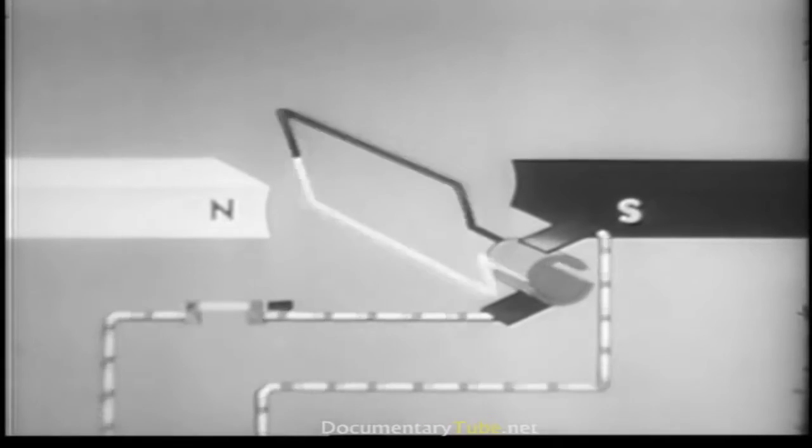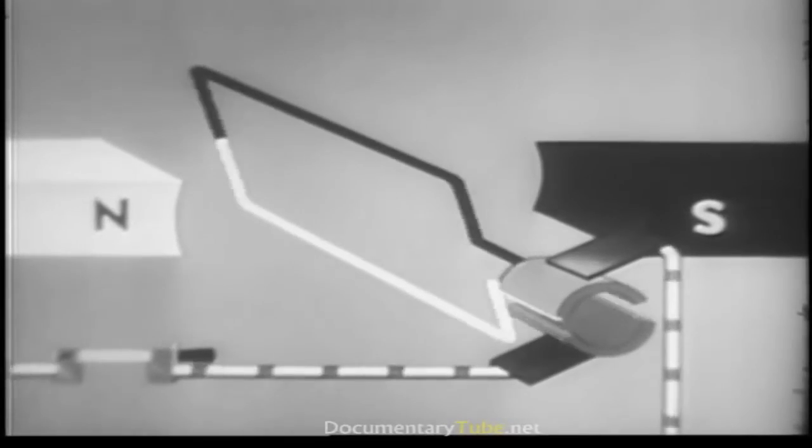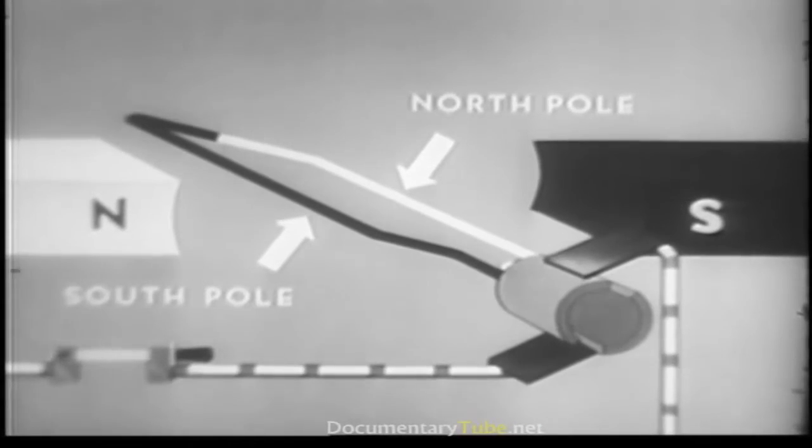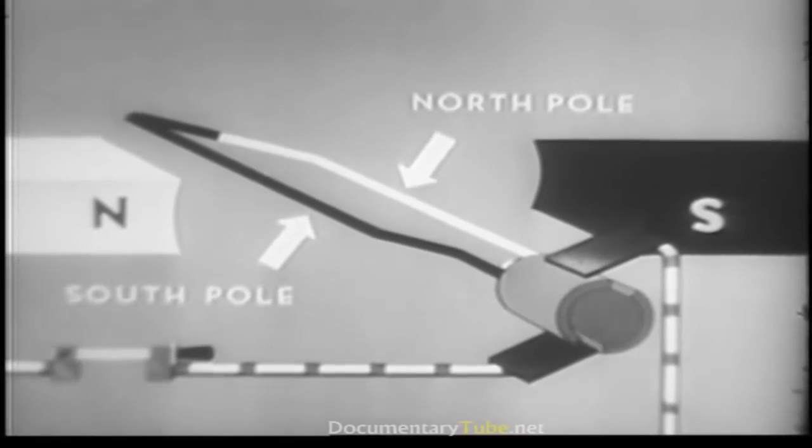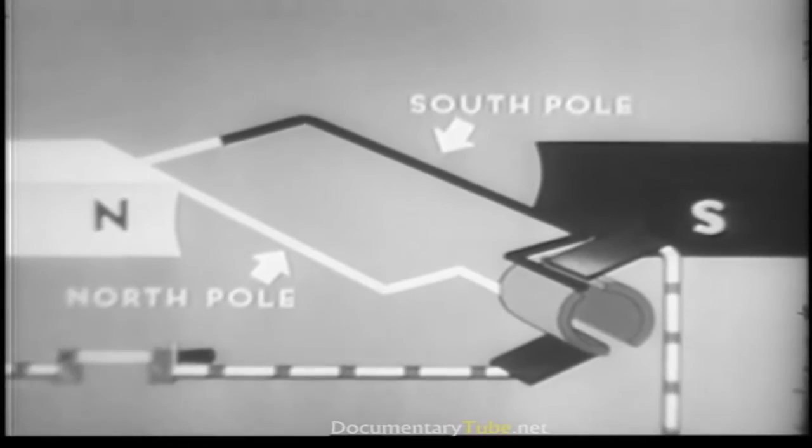Just before the loop becomes aligned, each segment disconnects from one brush, momentum carries the loop past its objective, and the segments connect with another brush. This changes the direction of the current in the wire loop, which in turn changes the loop's polarity.